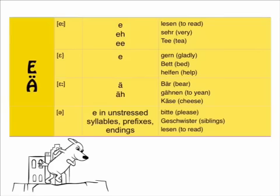So now it's a bit more complex. We have the Ä and the E sound. So here first what you already know: the difference between E and E, so long and short. Here the notation of the long E, you already know it: H or double vowel. Lesen, sehr, Tee. Short one: gern, Bett, helfen. Once again: lesen, sehr, Tee, gern, Bett, helfen.